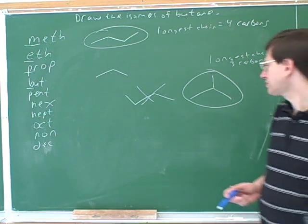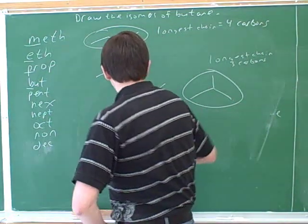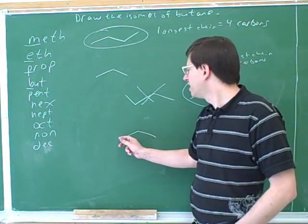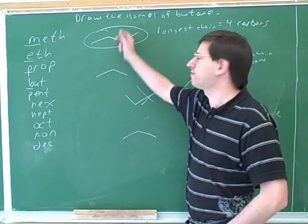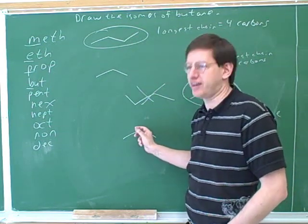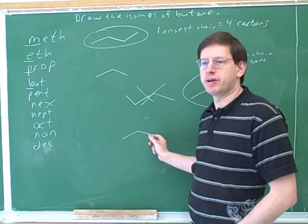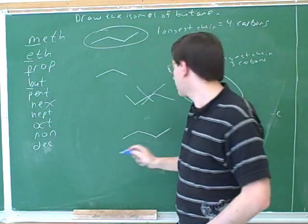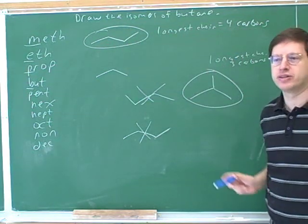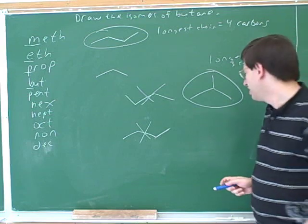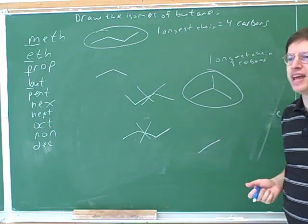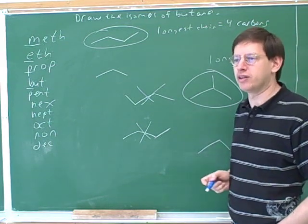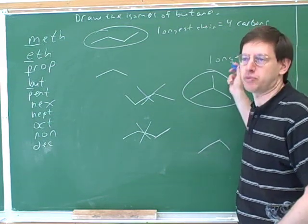Let's ask if there are any other isomers. I drew the longest chain with three carbons, then tried putting the fourth carbon on the end — that just got me back to a longest chain of four carbons. Putting the fourth carbon in the middle did give me a new molecule. Putting it on the other end would again give a longest chain of four carbons. So I've basically proven that these are the only isomers of butane. You could try drawing just two carbons, but when you try to put in the third and fourth, you're always going to have a longest chain more than two carbons — so the longest chain has to be at least three.